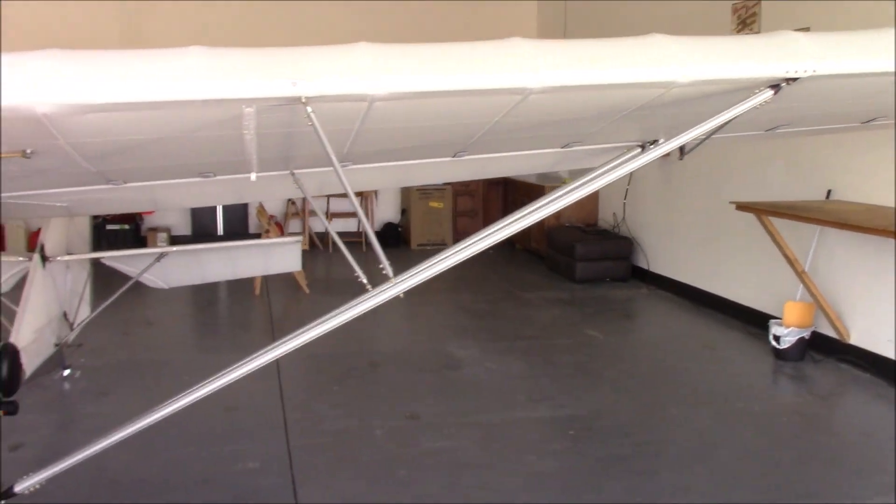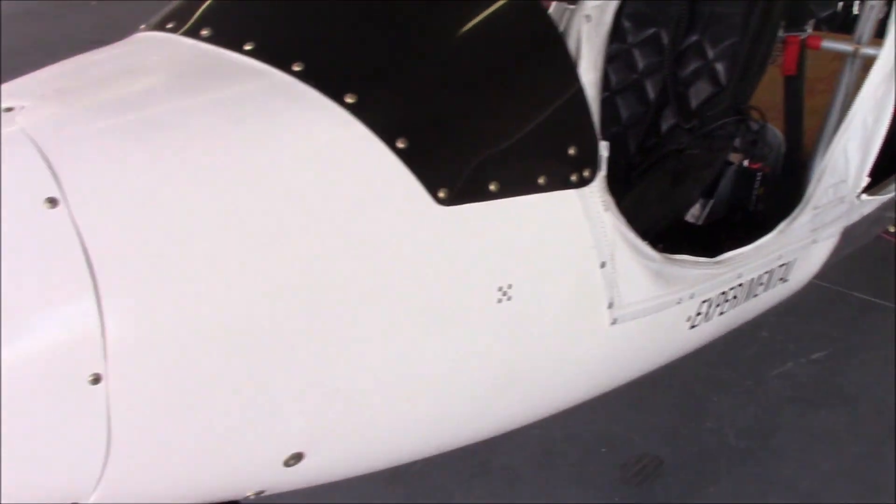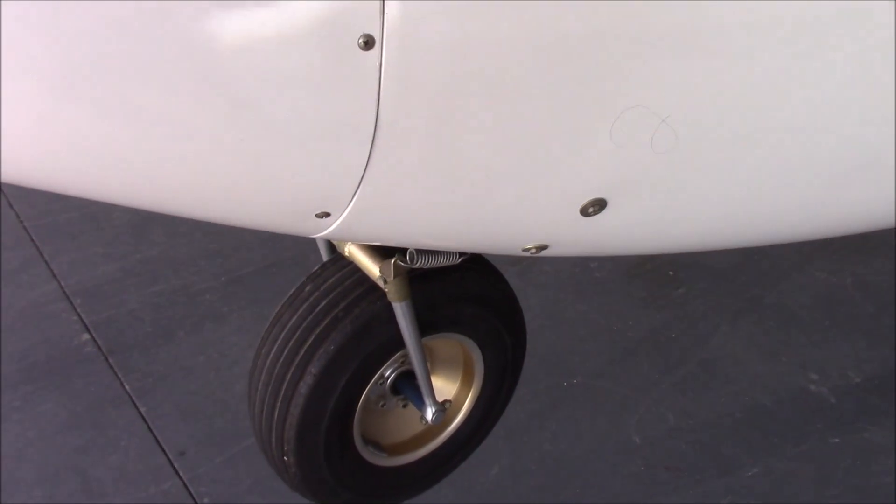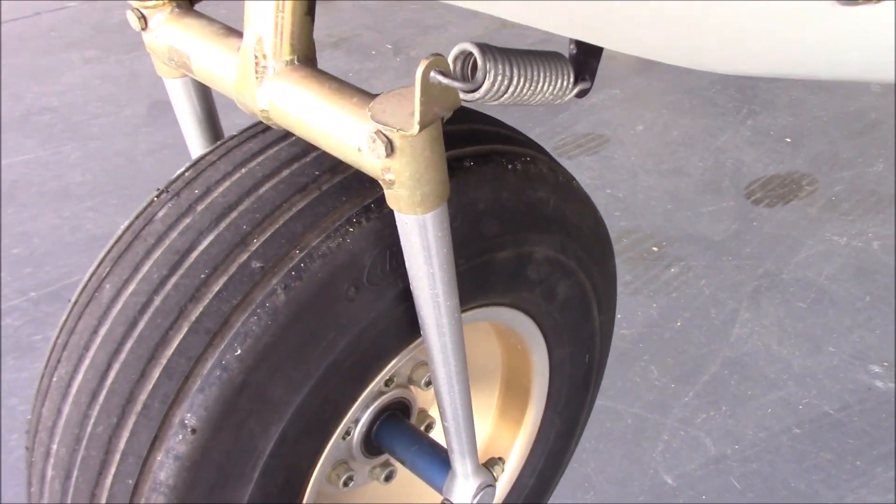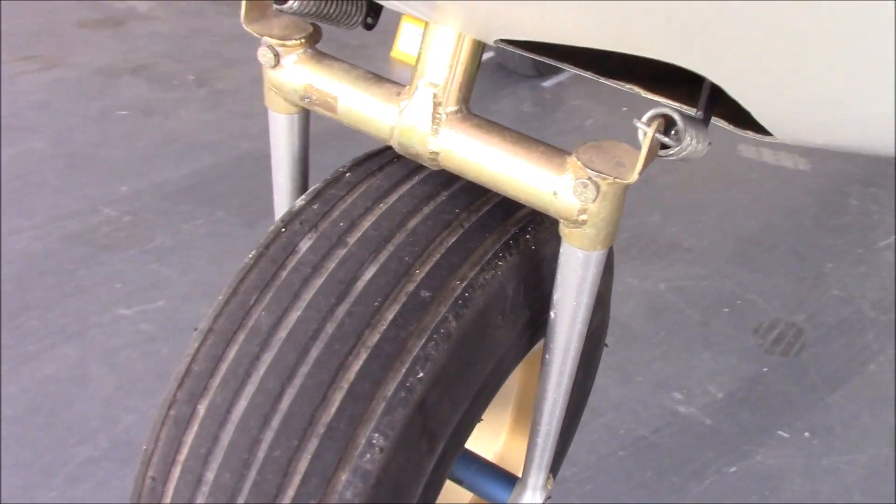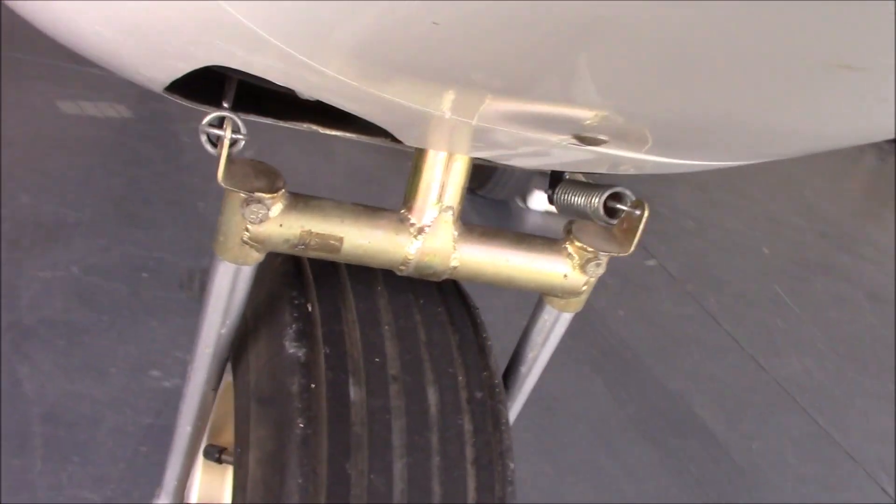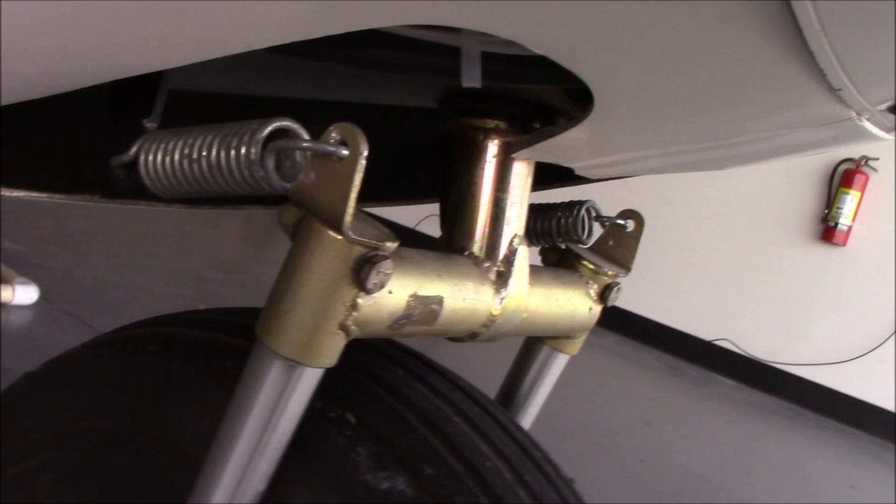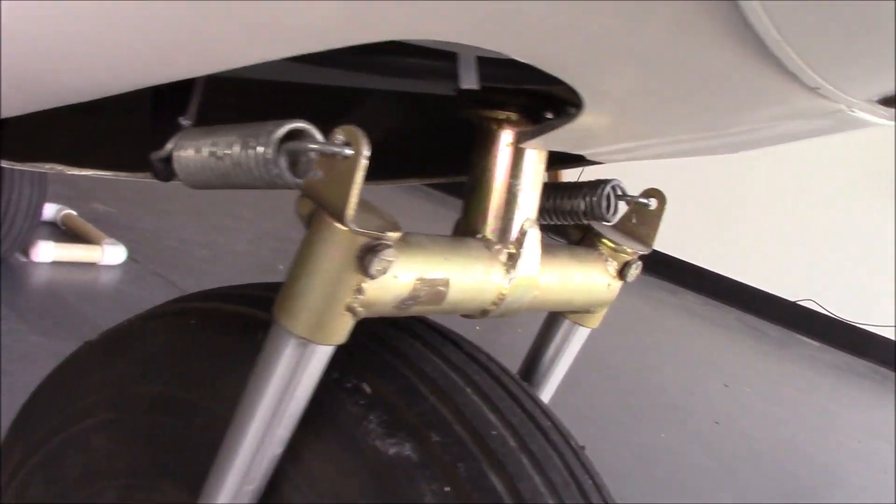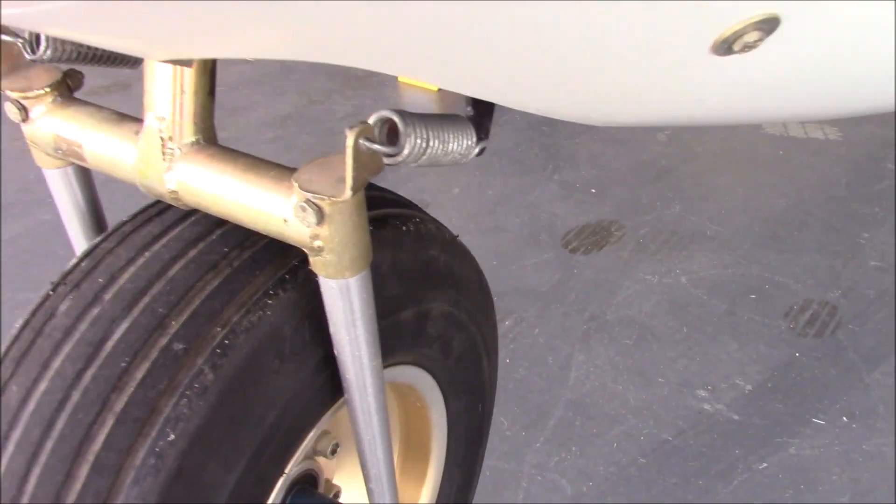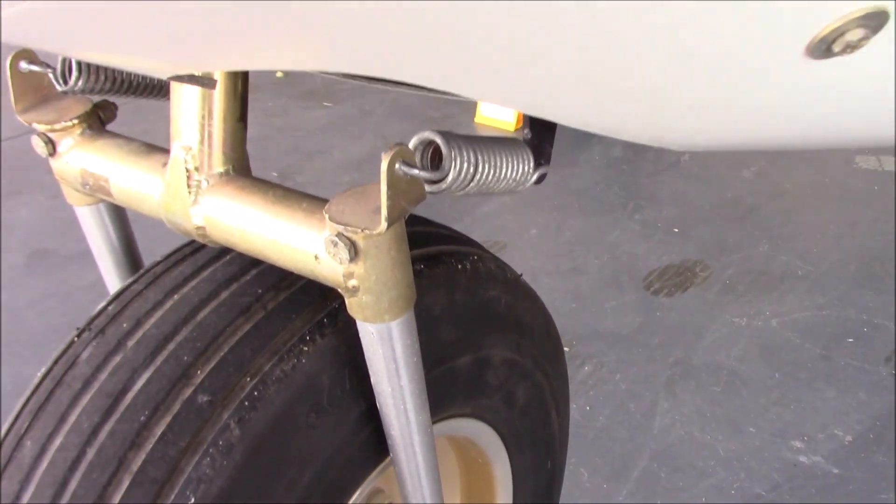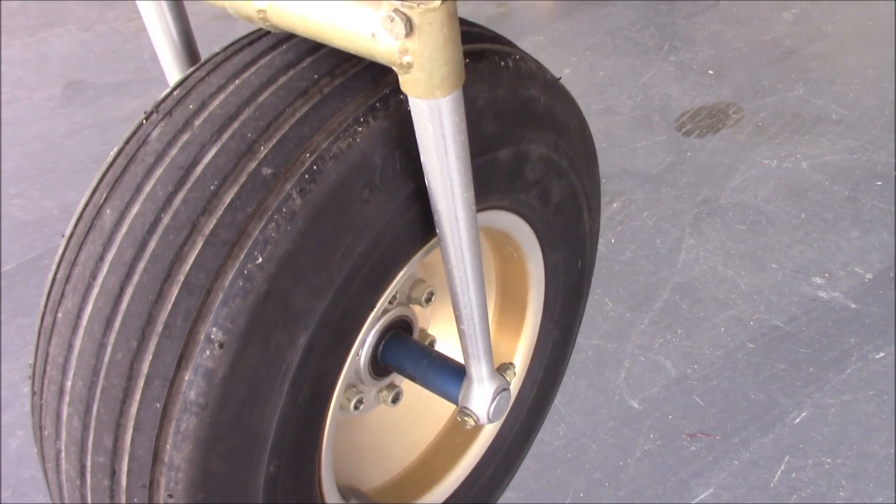Good morning. So what we're going to do today is we're going to change our fork altogether. This is the fork I got with my GT500, it's a Quicksilver aircraft. And as you can see it has springs right there on both sides. This is how they come.